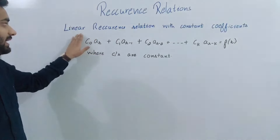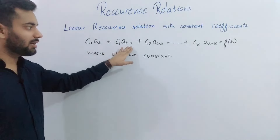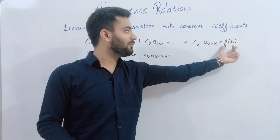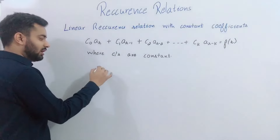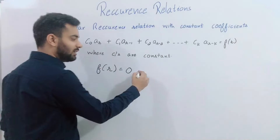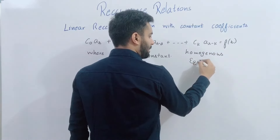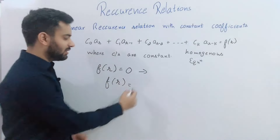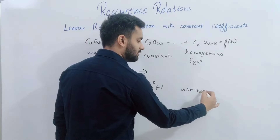Next we have the linear recurrence relation with constant coefficients, defined as: C(0)·A(R) + C(1)·A(R-1) + C(2)·A(R-2) + ... + C(K)·A(R-K) = F(R), where all C values are constants. If F(R) equals 0, meaning the right side of the equation is 0, then we call this a homogeneous equation. Otherwise, if F(R) is some function of R such as R² or R²+1, then we call it a non-homogeneous equation.